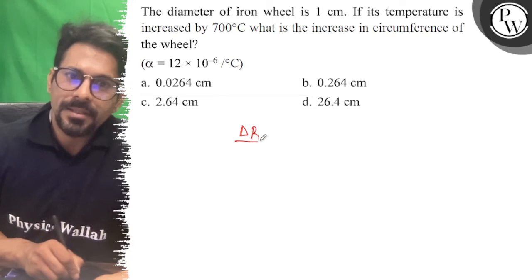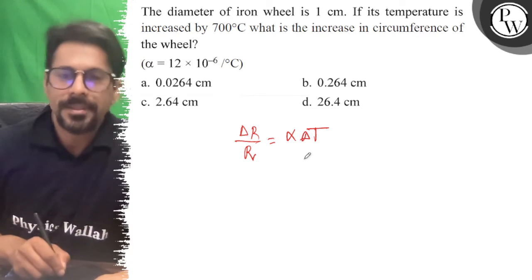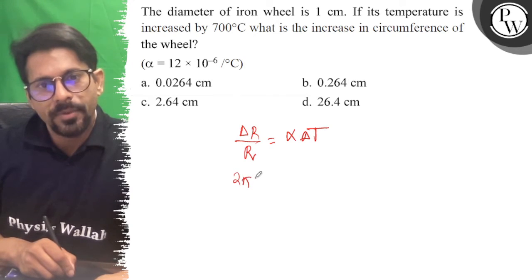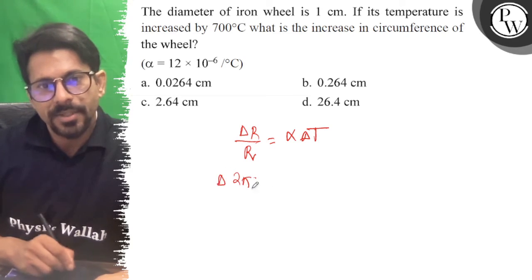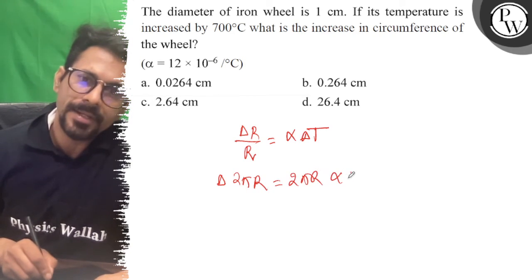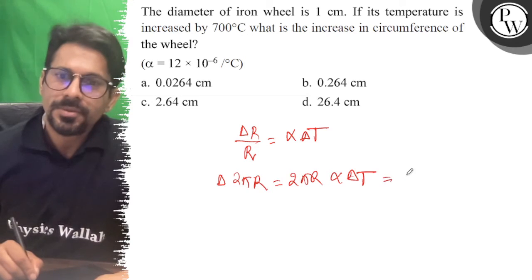So if I write del r by r, that is equal to alpha del t. Right, so 2π into del r... my circumference del into 2πr is equal to 2πr alpha del t. So this...